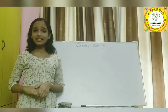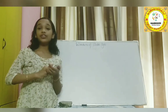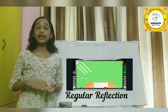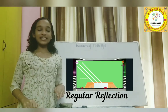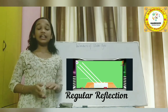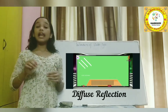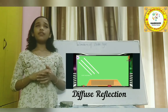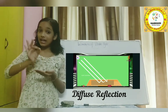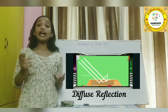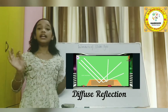Which were the two reflections? Correct! Regular reflection and diffuse reflection. When light falls on a smooth surface, it is reflected regularly — it is known as regular reflection. When light falls on a rough surface, for example cardboard, its surface is rough. When light falls on a rough surface, it is reflected irregularly — it is known as diffuse reflection.